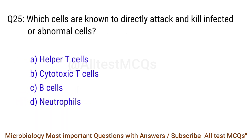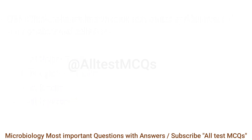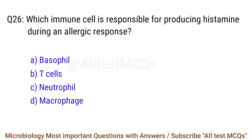Q25. Which cells are known to directly attack and kill infected or abnormal cells? The right answer is option B: Cytotoxic T cells. Q26. Which immune cell is responsible for producing histamine during an allergic response? The right answer is option A: Basophil.